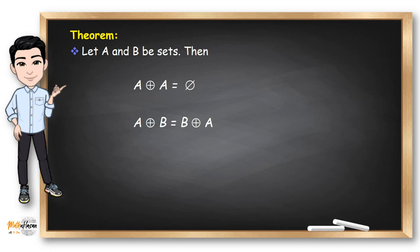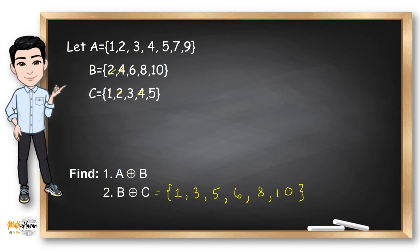We also have some theorems about symmetric difference. First, the symmetric difference of the same set with itself is always an empty set — because all elements are common, so everything gets removed. Second, symmetric difference is commutative: A symmetric difference B equals B symmetric difference A. In the previous example, the symmetric difference of B and C gives the same result as C symmetric difference B.